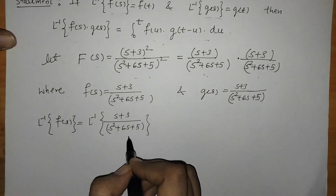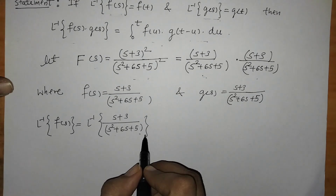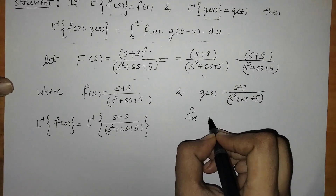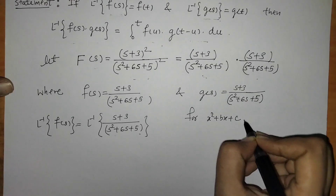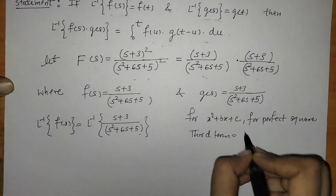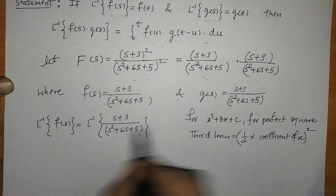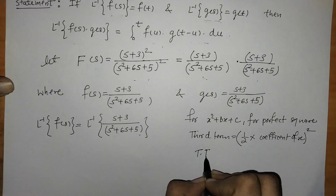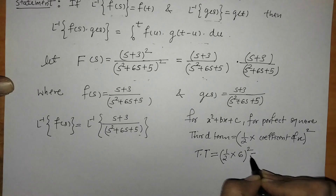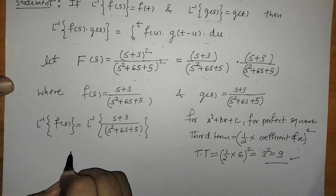L inverse of f(s) is L inverse of (s + 3)/(s² + 6s + 5). Here in the denominator we have a quadratic factor, so we have to adjust a perfect square so that we can use inverse Laplace transform formulas. For a quadratic x² + bx + c, the third term for a perfect square is given by (1/2 × coefficient of x)². Here we have coefficient 6, so the third term is 3² = 9. So we have to adjust 9 here.